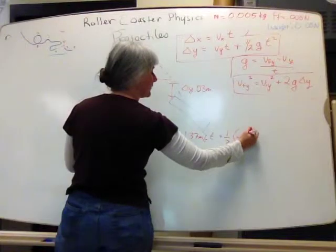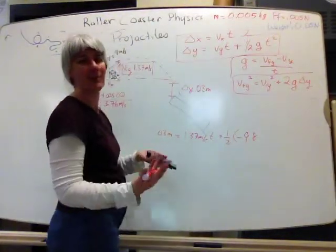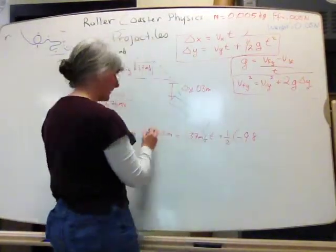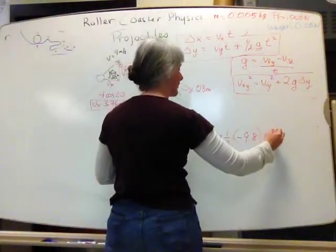plus one-half, negative, and I really want to use 9.8 here, because I want to be more accurate. And it's negative, because down is always negative. Oh, and down is always negative, so I have to have a negative displacement, times time squared.